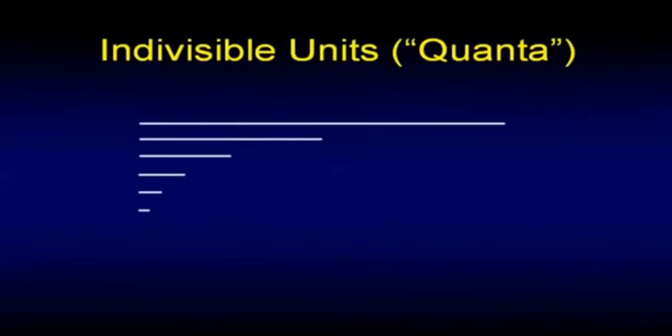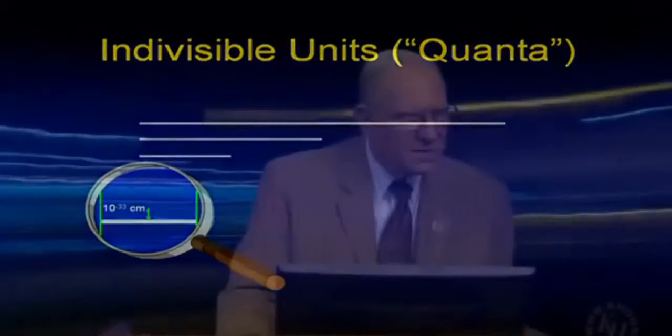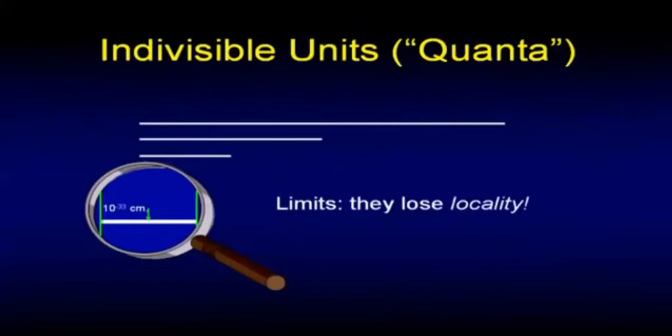It turns out I can keep doing that until I get to a distance of 10 to the minus 33 centimeters. And then I discover if I try to cut that in half, that thing is throughout the entire universe at the same instant. It loses a property that physicists call locality. It is no longer local. And they actually prove this in a laboratory experiment, that every photon is connected with every other photon in the universe immediately, faster than the speed of light.